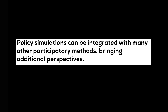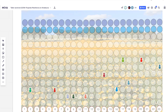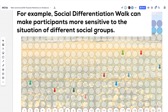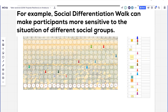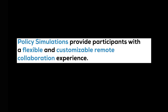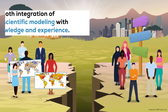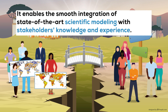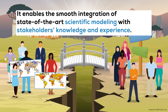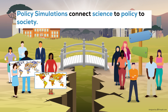Policy simulations can be integrated with many other participatory methods, bringing additional perspectives. For example, a social differentiation walk can make participants more sensitive to the situation of different social groups. Policy simulations provide participants with a flexible and customizable remote collaboration experience, designed for all stakeholders to work jointly towards the futures they desire. It enables the smooth integration of state-of-the-art scientific modeling with stakeholders' knowledge and experience. Policy simulations connect science to policy to society.